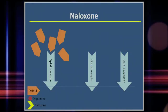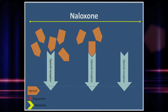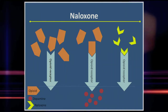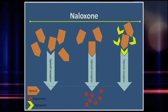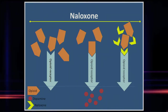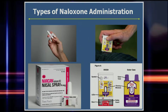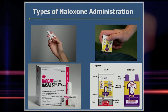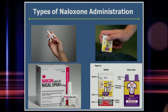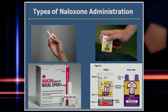Naloxone, also known by the trade name Narcan, removes the opioid from its receptor and blocks further binding, immediately reversing the effects of the opiate drug. This increases respiratory drive, potentially saving the life of an overdose victim. Naloxone is safe, acts quickly, and may be administered through the nose as a nasal spray, or with an autoinjector, like an EpiPen, to an unresponsive person.